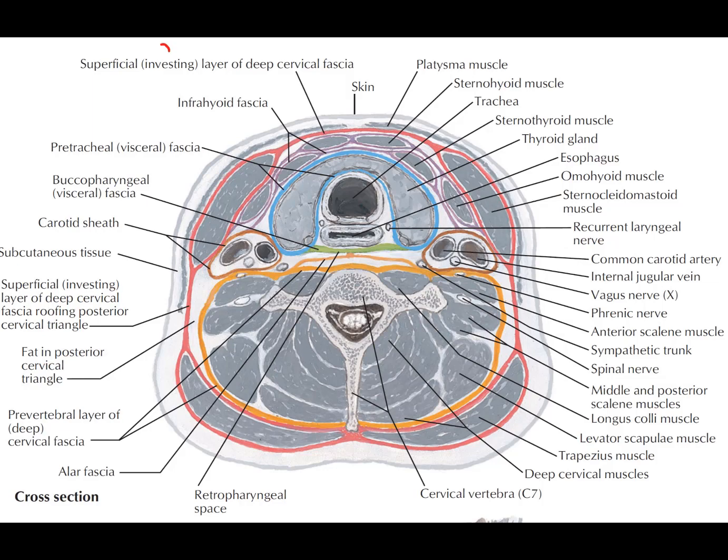The deep cervical fascia is divided into the investing layer, which is the superficial part of the deep cervical fascia, and the deep part of the deep cervical fascia. Because the deep cervical fascia extends between many complex structures, for simplification it is divided into the superficial investing layer and the deep layers.